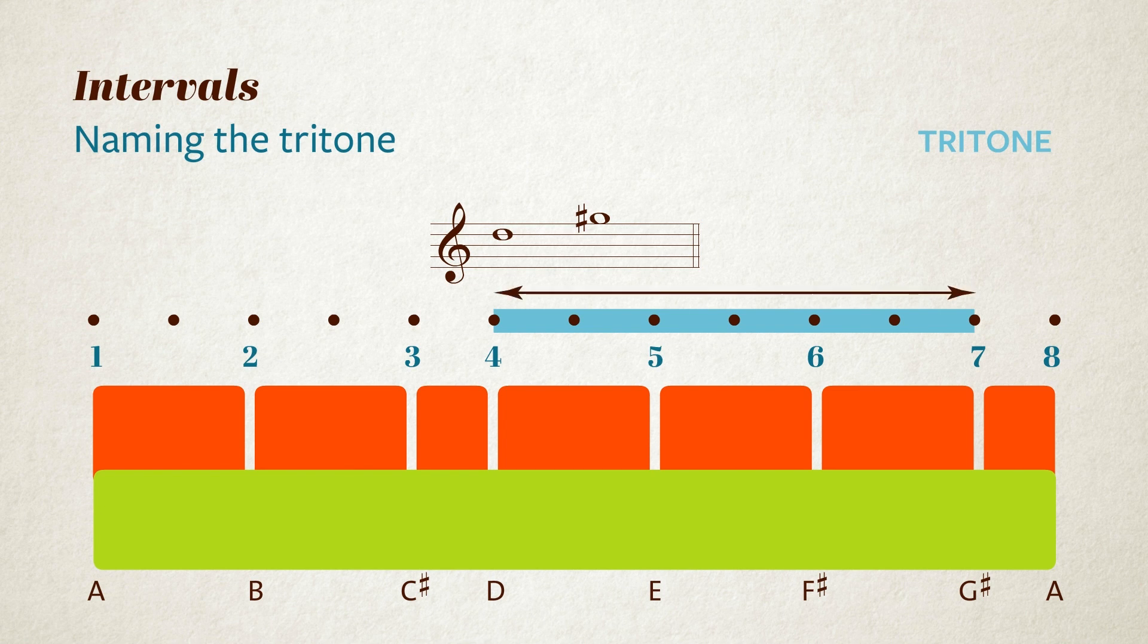Now though, let's name it according to the system we've been using here. D to G is a perfect fourth, so D to G sharp, which is a semitone wider, must also be some sort of fourth. We say it's an augmented fourth. Any perfect interval that's increased by a semitone is said to be augmented. In pop or jazz, you're just as likely to say it's a sharp four, or a sharpened fourth, or of course you can just call it a tritone.